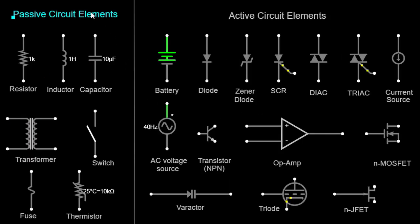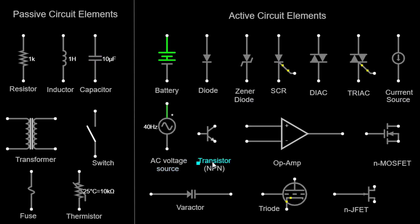Welcome to our video on passive circuit elements and active circuit elements. In this video, we will explore the fundamental components that make up electronic circuits. We will delve into the world of passive circuit elements such as resistors, inductors, capacitors, transformers, switches, fuses, and thermistors. Additionally, we will uncover the realm of active circuit elements, including batteries, diodes, Zener diodes, SCR, DIAC, TRIAC, current sources, AC voltage sources, transistors (NPN), op amps, NMOS FETs, varactors, triodes, and NJFETs. So let's dive in and unravel the mysteries behind these essential building blocks of electronic systems.